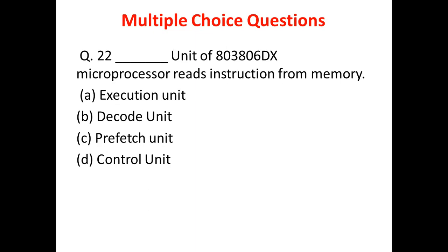Question 11: Which unit of the 80386 DX reads the instructions from the memory? Option A is the Execution Unit, Option B is the Decode Unit, Option C is the Prefetch Unit, and Option D is the Control Unit. The answer is C — the Prefetch Unit reads the instructions from the memory.